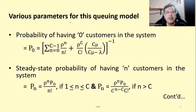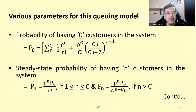These are the various parameters which can be evaluated for this queuing model. The first one is P0, which is the probability of having zero customers in the system. That can be calculated as: summation n equals 0 to C minus 1 of rho to the power n by n factorial, plus rho to the power C by C factorial times C·mu divided by (C·mu minus lambda), the whole thing to the power of minus 1. The steady-state probability of having n customers in the system is P_n equals rho to the power n times P0 divided by n factorial, where n lies between 1 and C.